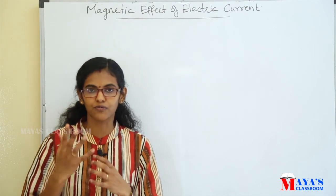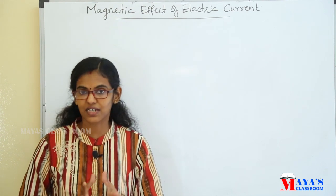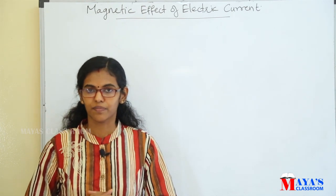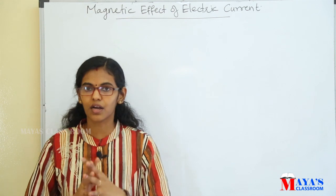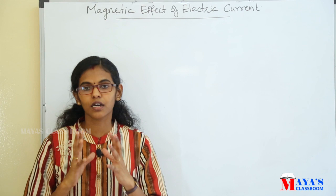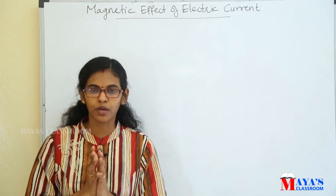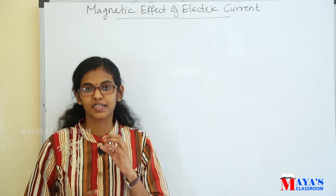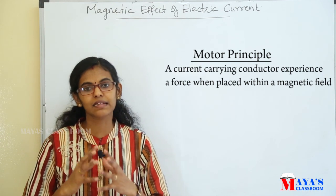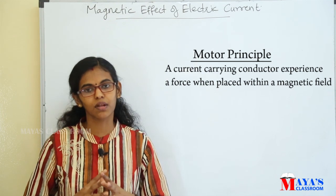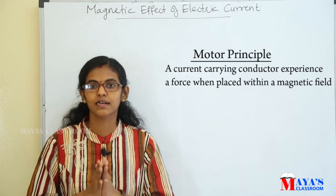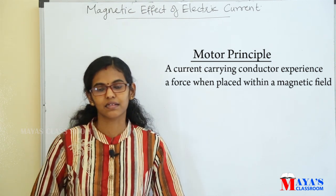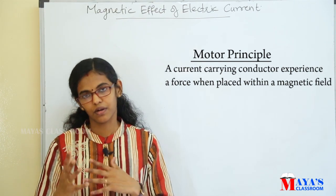If a conductor is placed in a magnetic field, the direction of the current and the direction of the magnetic field determine the direction of force. This is the working principle of the motor. A current-carrying conductor experiences a force when it is placed within a magnetic field — that is the motor principle.